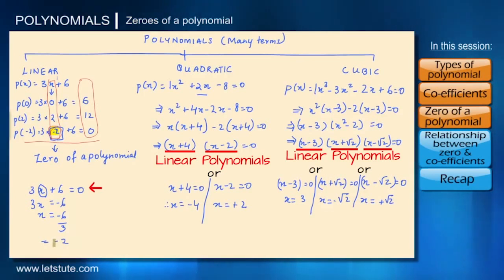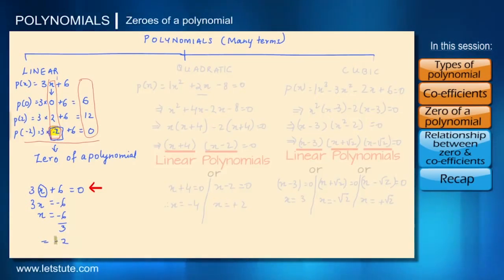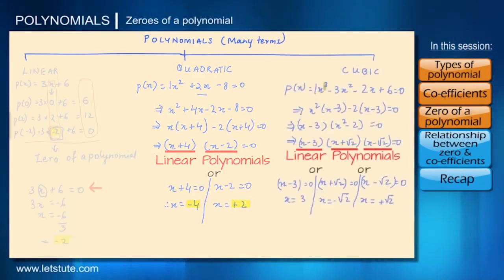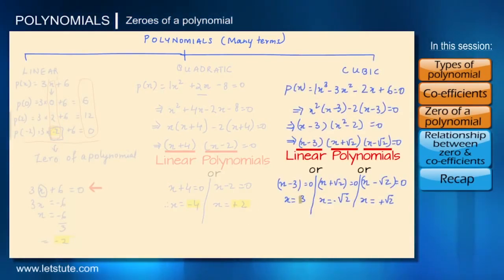The zeros of linear polynomial 3x plus 6 is minus 2. The zeros for quadratic polynomial x square plus 2x minus 8 is minus 4 and plus 2. And for this cubic polynomial the zeros of the polynomial are 3 minus root 2 and plus root 2.